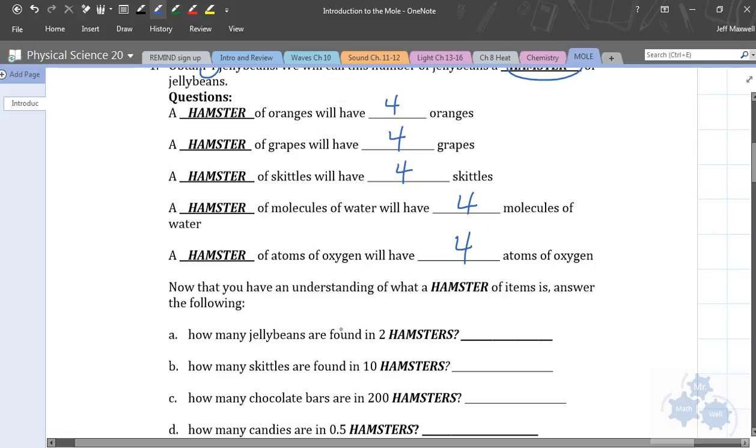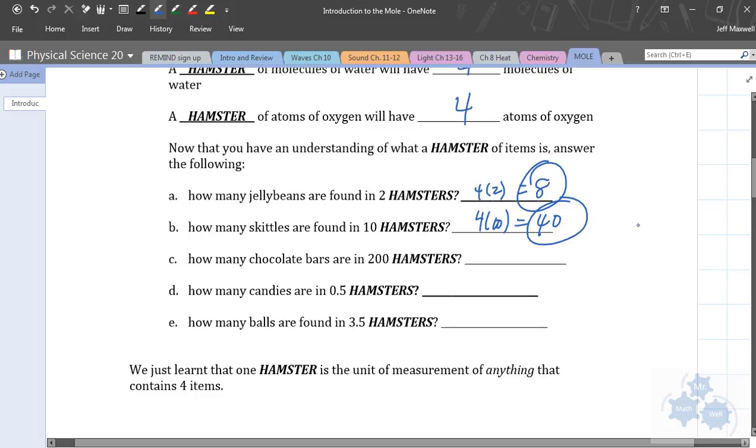Now that we have an understanding of what a hamster of items is, let's answer the following questions. How many jelly beans would there be found in two hamsters of jelly beans? Four times two or eight? Yes. What about the number of Skittles in ten hamsters? Four times ten to make 40. How many chocolate bars are there in two hundred hamsters? Eight hundred. Because we're doing two hundred groups of four. How many candies are there in 0.5 hamsters? Very good. And this is a tough one. What about 3.5 hamsters? 3.5 times 4 is 14. Very good.